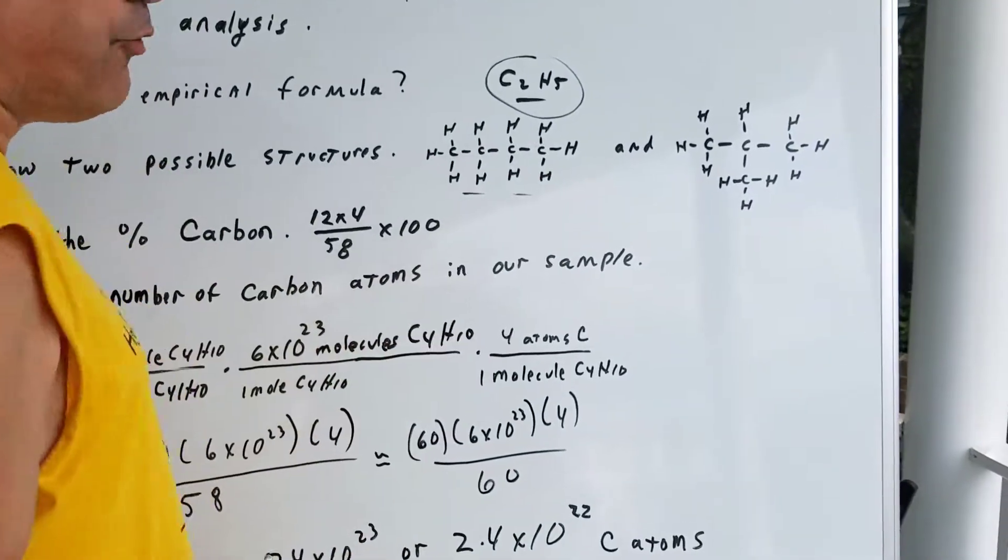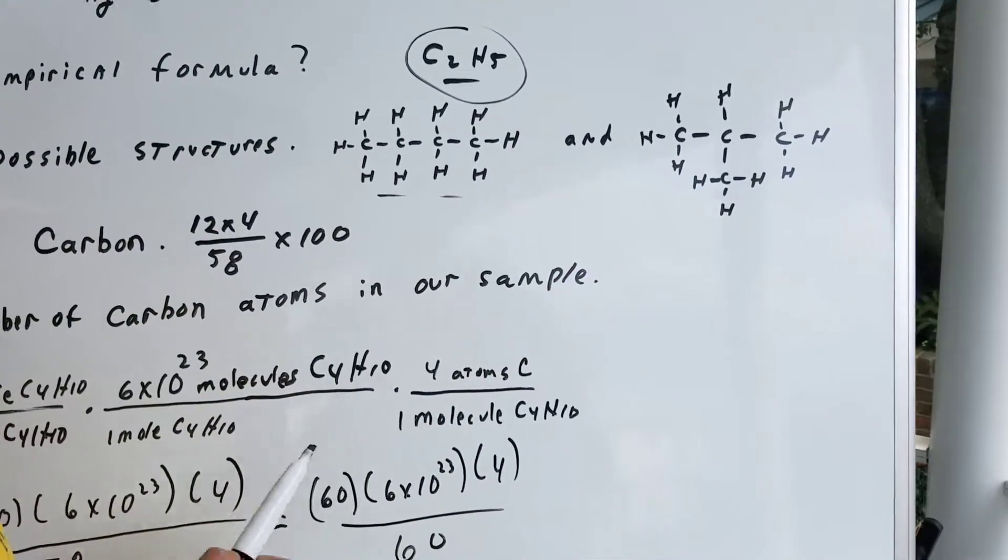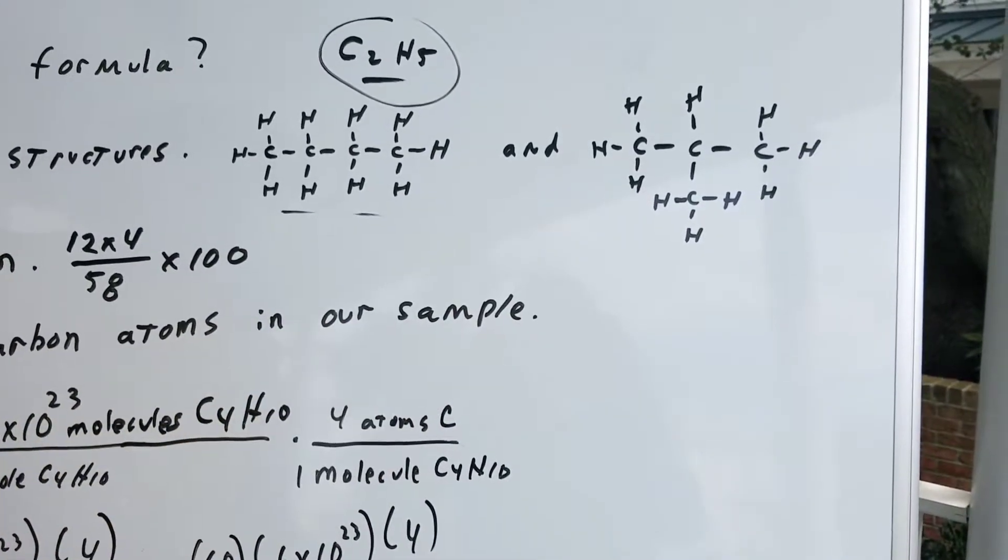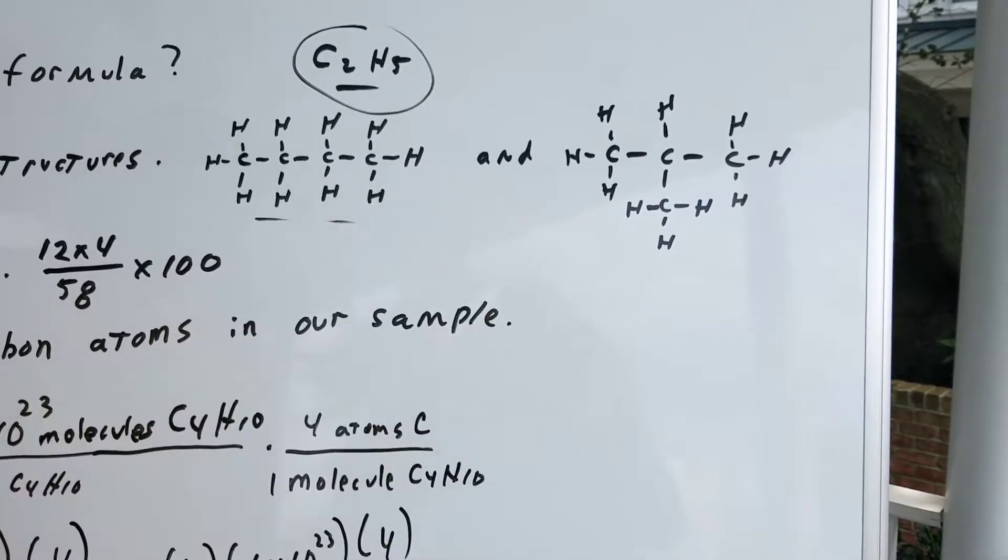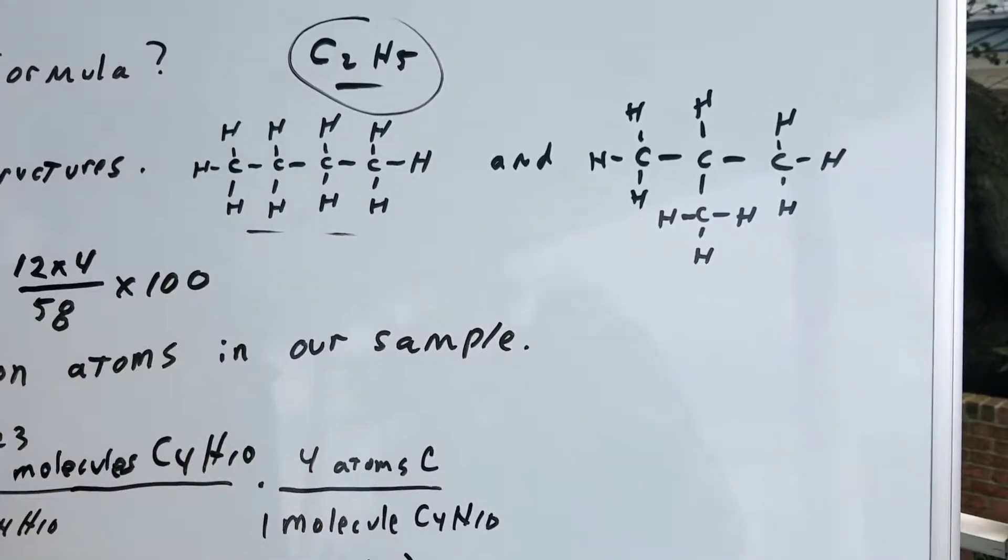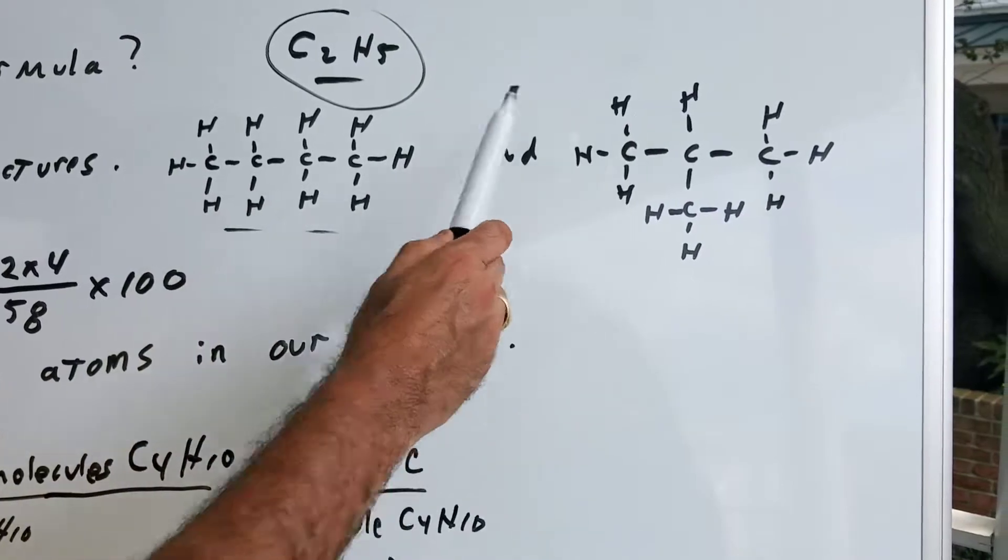Or, instead of laying out four in a straight line, if you laid out only three and dropped a branch point in the middle, you would get 2-methylpropane. These would be two isomers. These are called isomers. Notice isomers have the same molecular formula, but they differ in their structure.